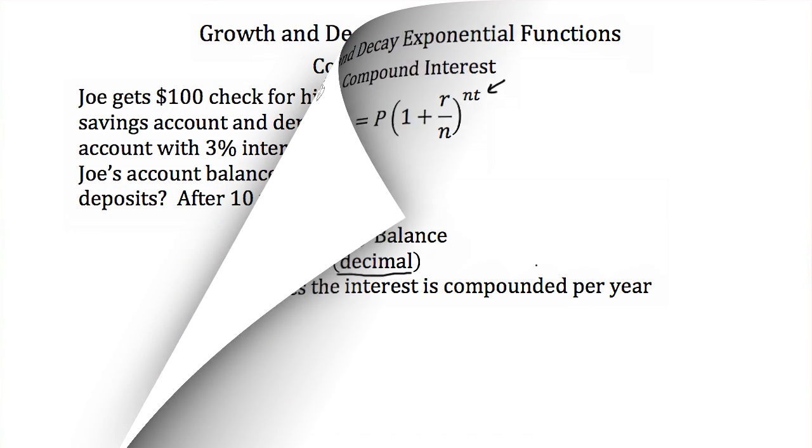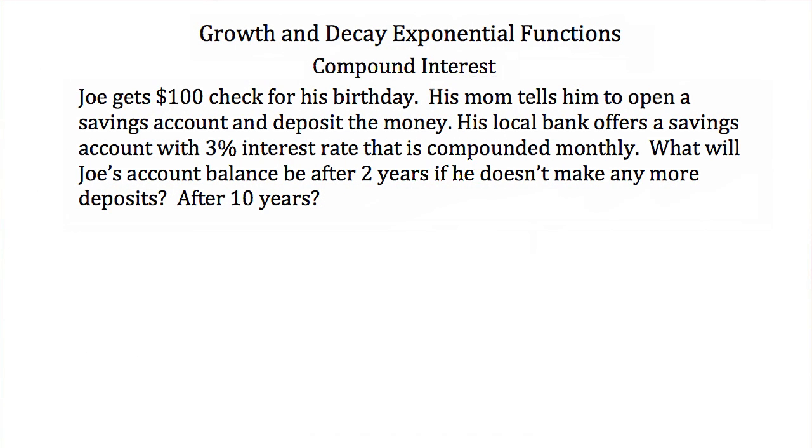So let's see how we can use this formula. Here we're told that Joe gets a $100 check for his birthday. His mom tells him to open a savings account and deposit the money. His local bank offers a savings account with 3% interest rate that is compounded monthly. So what will Joe's account balance be after two years if he doesn't make any more deposits? And how about after 10 years? To figure this out, we're going to use our compound interest formula: a equals p times 1 plus r over n to the n times t power.